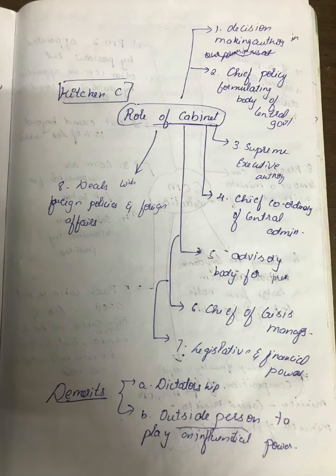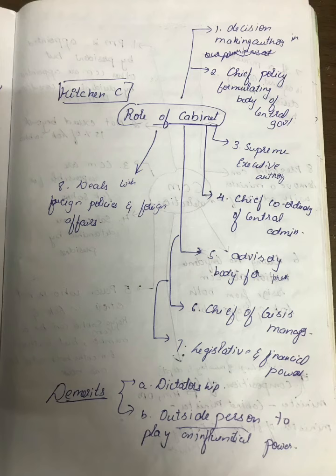Seventh, the cabinet holds legislative and financial powers — all legislative and financial powers are taken care of by the cabinet. Eighth, they deal with foreign policies and foreign affairs. The demerits of the cabinet are that there can be dictatorship, and there can also be the influence of an outside person. So this is the role of the entire cabinet.